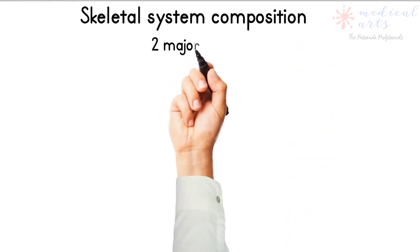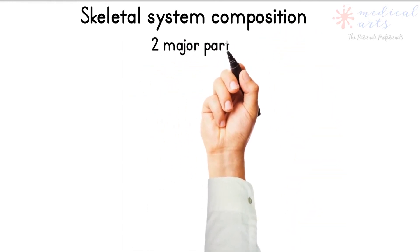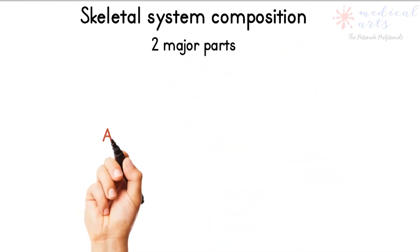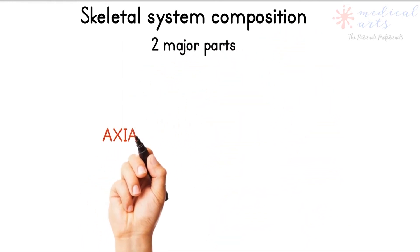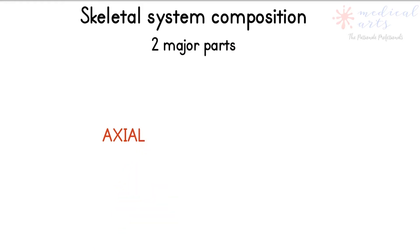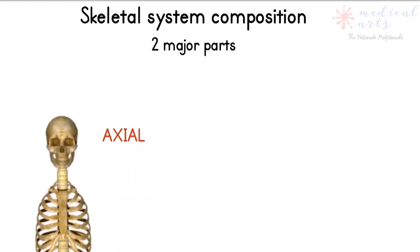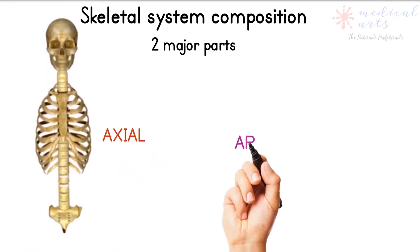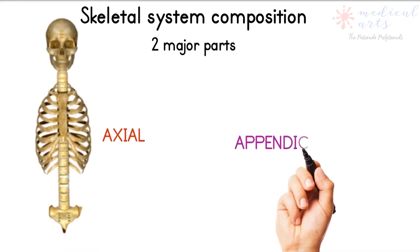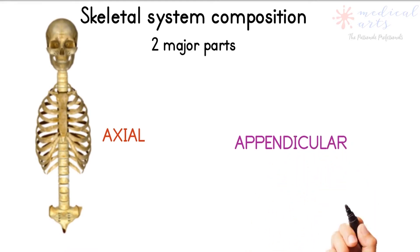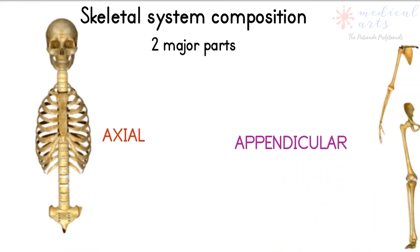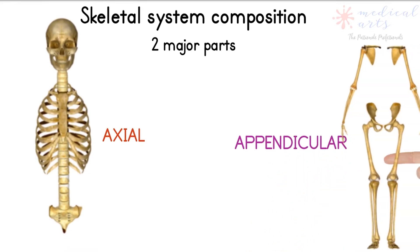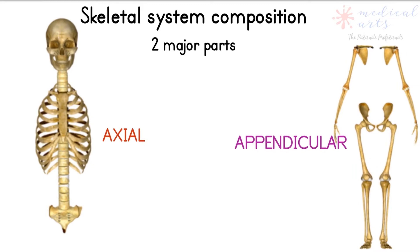What is the skeletal system made of? It consists of two major groups of bones. The first group is called the axial, which contains the bones that form the center of the body. The second group is called the appendicular, composed of the bones that form the peripheral limbs.